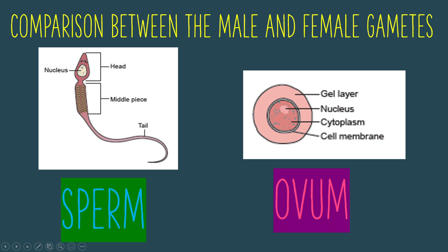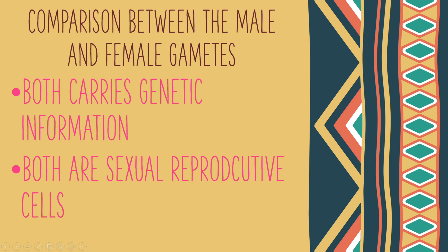An ovum is spherically shaped with a diameter of about 120 micrometers. The cytoplasm in the ovum contains nutrients for the developing embryo.